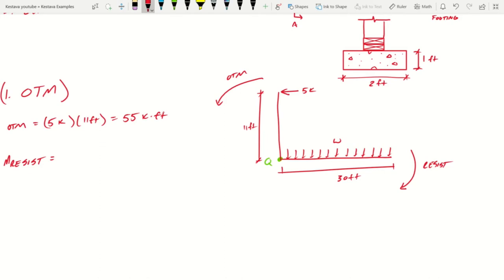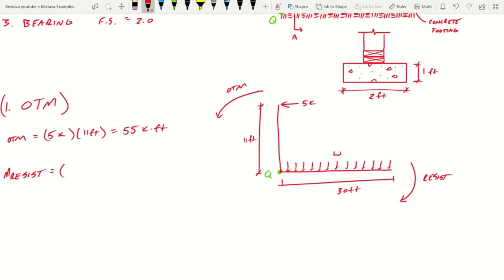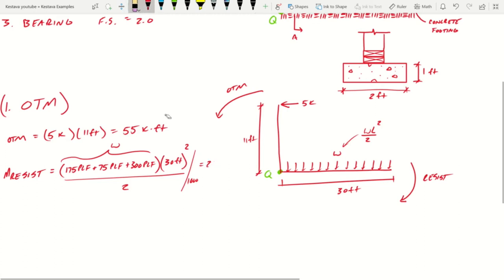So we need w. So w is the summation of the forces above. So we have 175 plf, we have 75 plf, and we have 300 plf. So let's add all those together: 175 plf, 75 plf, 300 plf times 30 feet. That's pounds, so that's your force, that's your total force. And for a distributed load we know that the equation is going to be w times l squared over 2. This right here is w, 30 feet is your l, so we're going to square that now, we're going to divide it by 2, and we're going to divide the whole thing by 1000 to get it into kip feet, which gets you 248 kip feet.